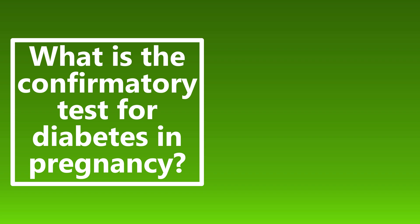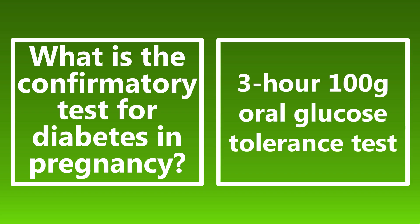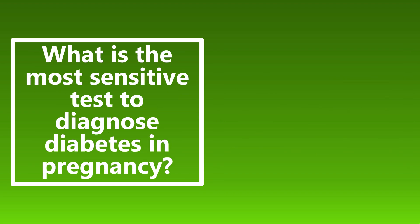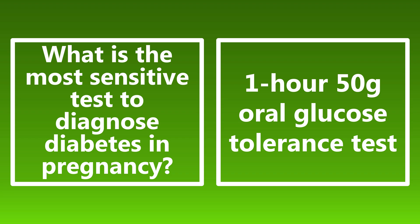What is the confirmatory test for diabetes in pregnancy? This is the 3-hour, 100-gram oral glucose tolerance test — the most specific test for diagnosing diabetes in pregnancy. What is the most sensitive test? That is the 1-hour, 50-gram oral glucose tolerance test. Be sure you know those differences and read exam questions carefully so you're not tripped up on test day.